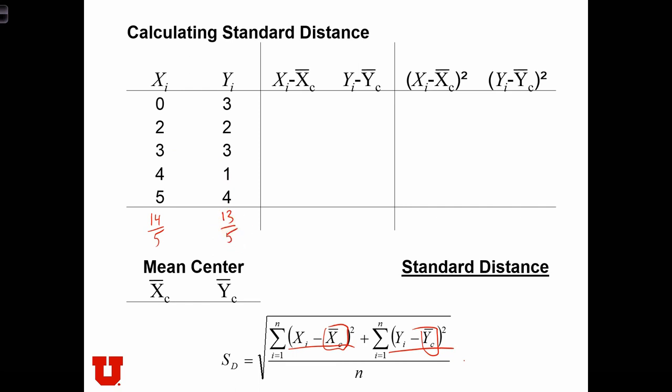And the next step will be to calculate xi minus x̄ and yi minus ȳ. So we're just going to subtract the x̄ from each of the x's in this column. We're going to subtract the ȳ from each of the y's in this column.